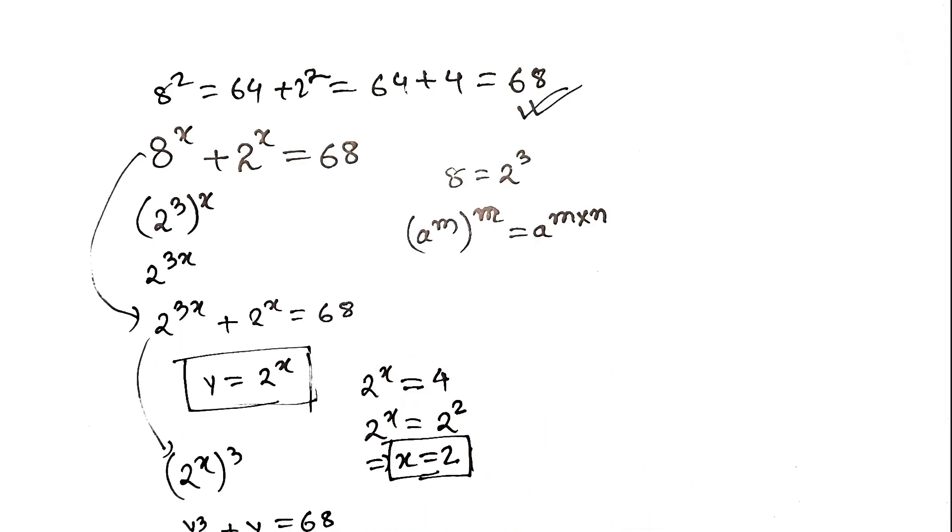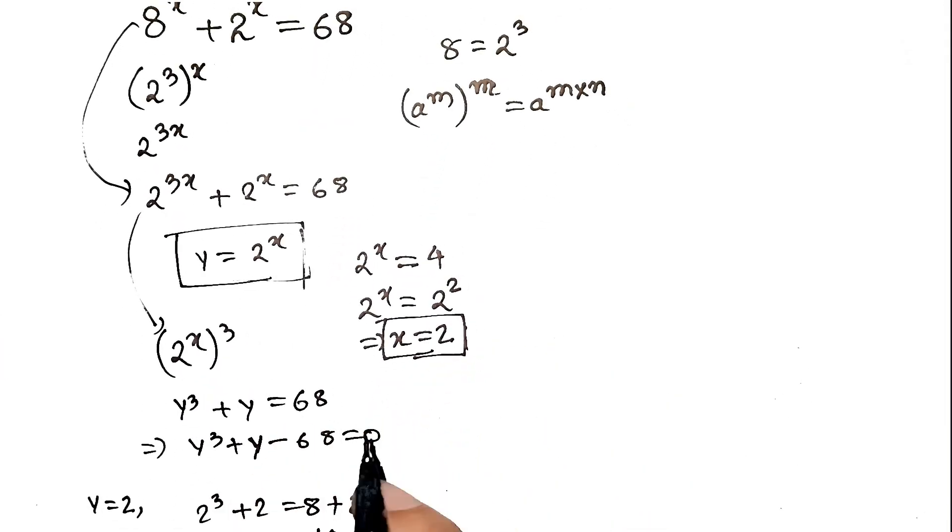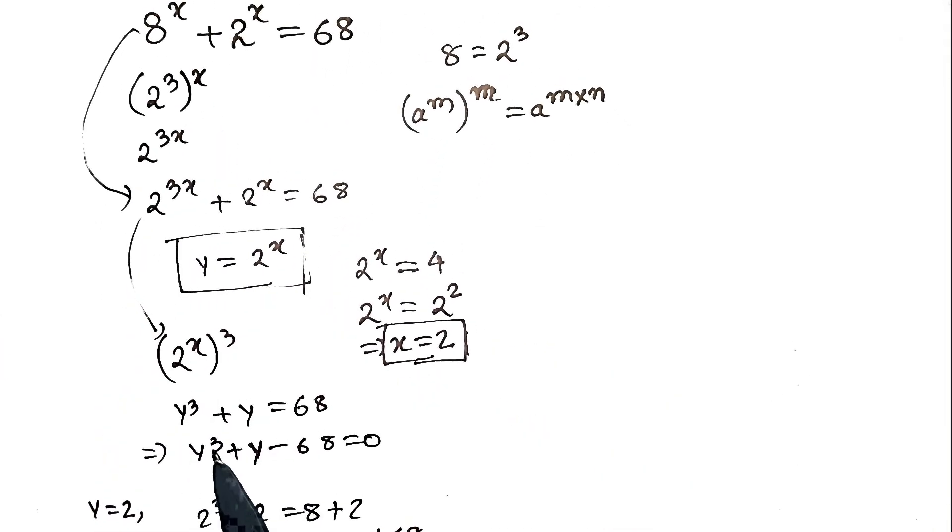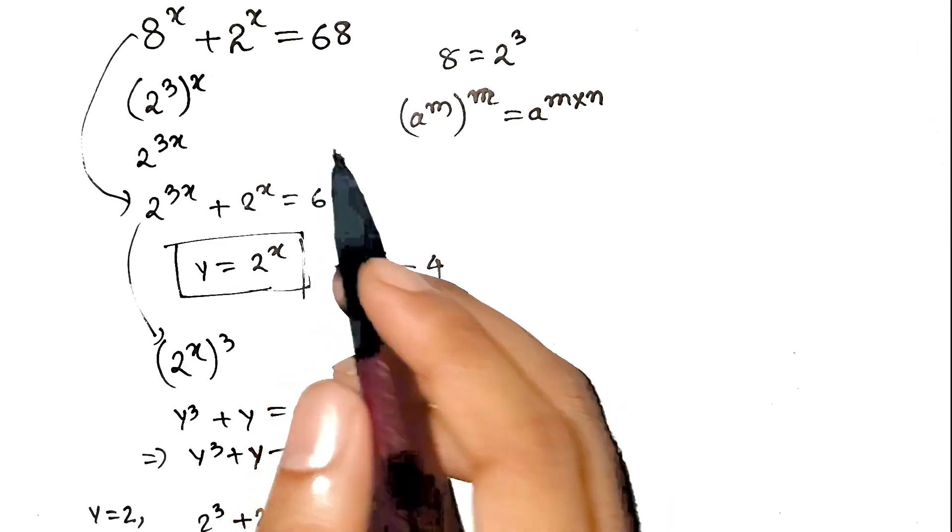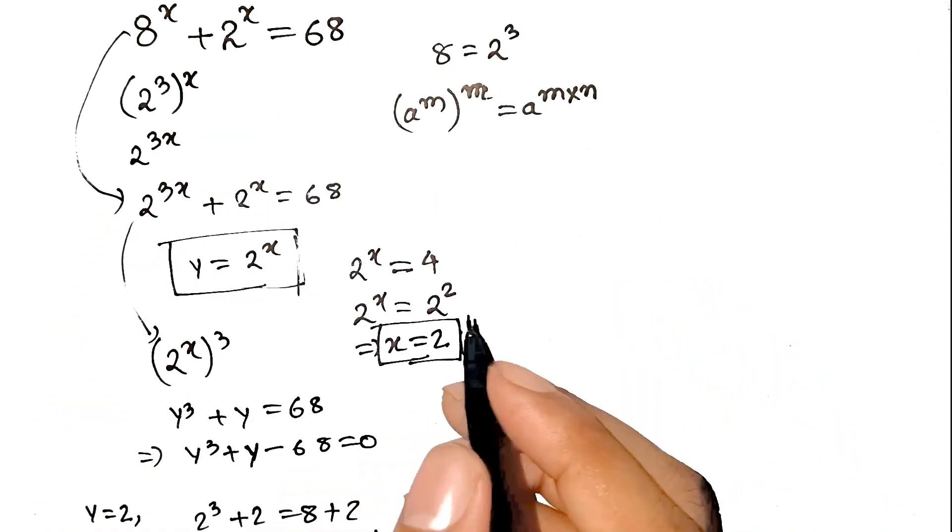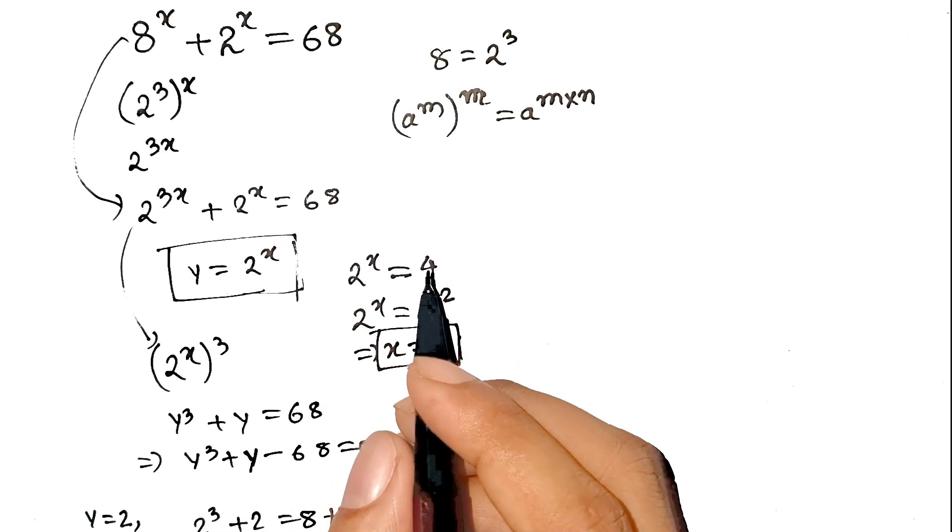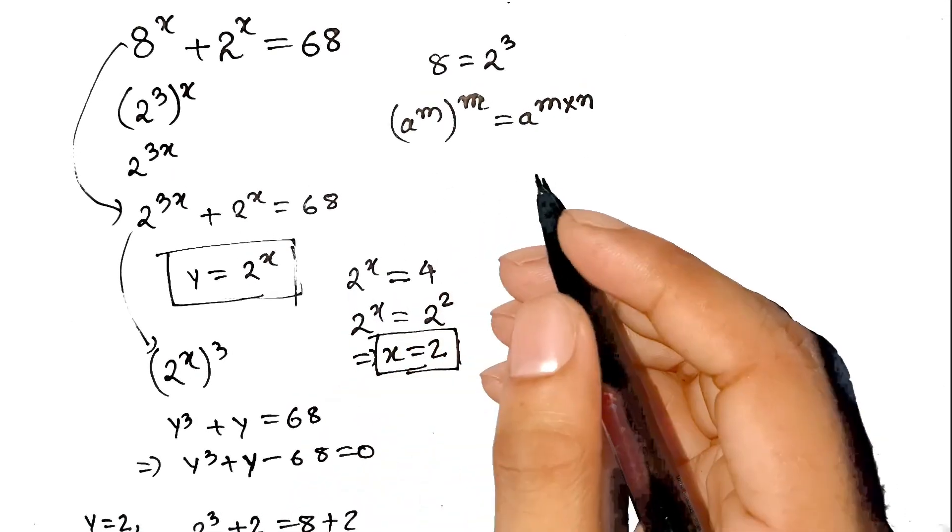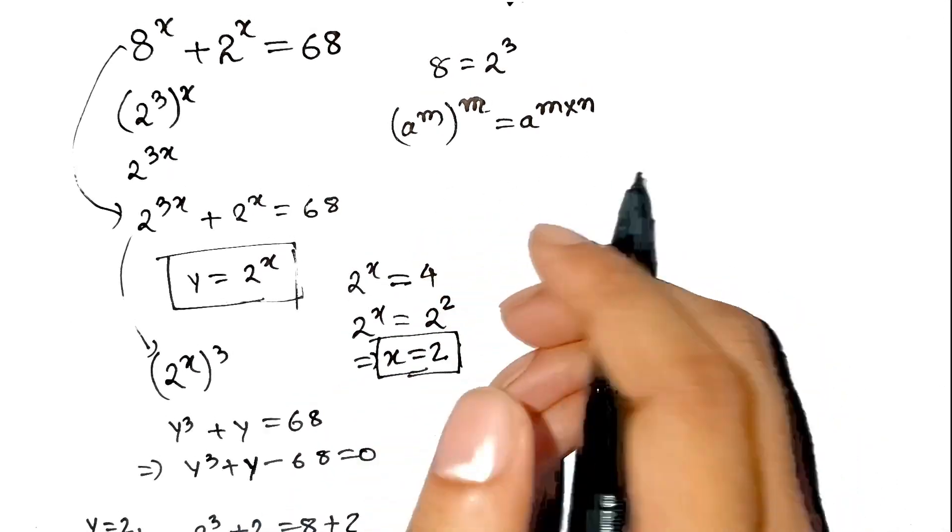So the real trick here wasn't heavy calculations. It was spotting the relationship between 8 and 2. That's why I keep saying math isn't about memorizing formulas. It's about seeing patterns. Math is basically just pattern recognition. Like noticing how every group project has one hard worker, one ghost member, and one guy who just brings chips.